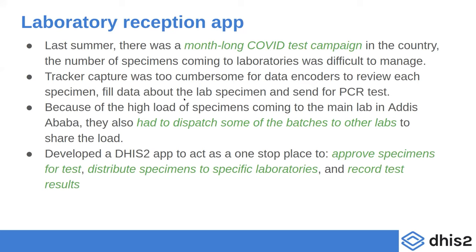Once development started and specimens came in, there was a month-long test campaign aiming to collect around 200,000 samples per month. This became very large for both the DHIS2 system and the laboratories. Tracker capture was a bit cumbersome, so data collectors were not able to be used to their full potential. There was also high load for specific labs — when a lab received a large batch of specimens, it dispatched them to another lab.